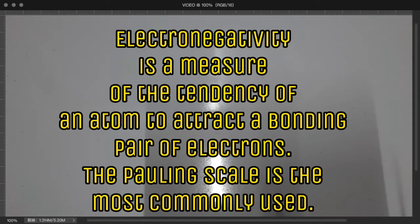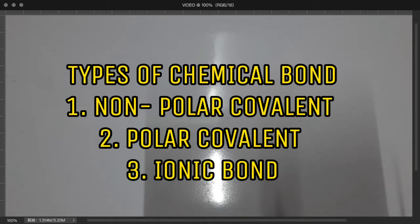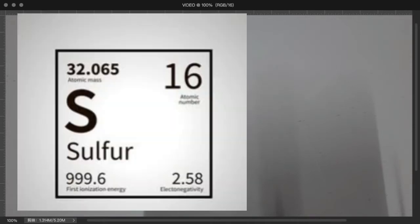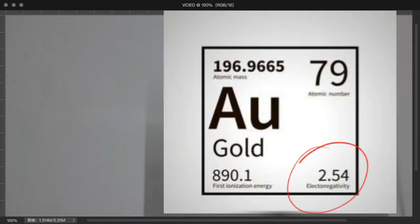How can we identify if a chemical bond is non-polar covalent, polar covalent, or ionic bond through their electronegativity difference? We must first learn the ranges.